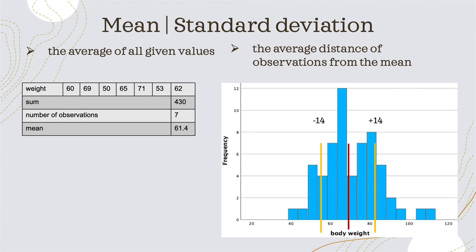To the left-hand side and to the right-hand side of the mean, it is the same distance. That is why I put minus 14 and plus 14 in this example — the standard deviation is 14 — and you can see it is the same distance that spreads around the mean.